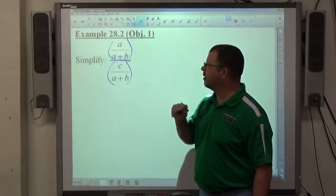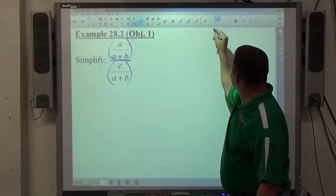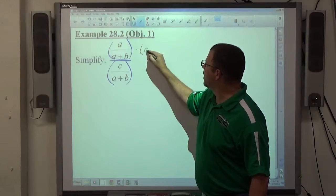A plus B, A plus B, both denominators are exactly the same. So the least common denominator is A plus B.